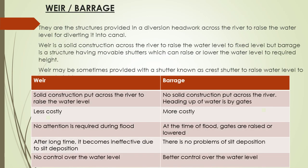Let us discuss about weir and barrage. They are structures provided in a diversion headwork across the river to raise the water level for diverting it into the canal. A weir is a solid construction across the river to raise the water level to a fixed level. A barrage is a structure having movable shutters which can raise or lower the water level to a required height. A weir may sometimes be provided with a shutter known as a crest shutter to raise the water level to a greater height.